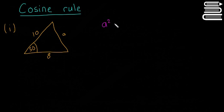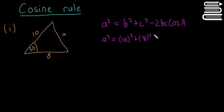So we're going to write the cosine rule. So it's going to be a² = b² + c² - 2bc cos A. So we're just going to sub the values in. So it's going to be a² = 10² + 8² - 2(10)(8) cos 50. And stick that into our calculator.